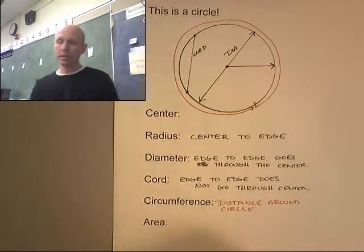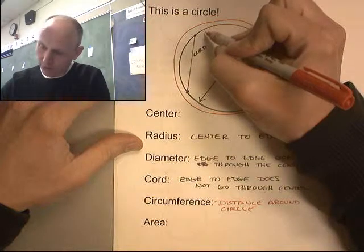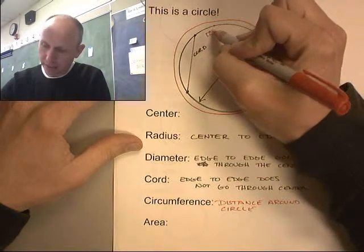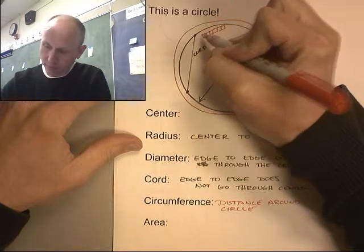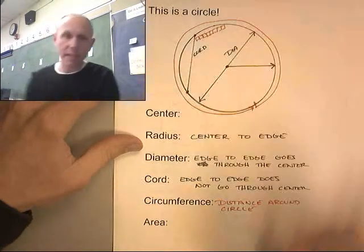And the area, that's how many little squares we could fit inside the circle. So the area is the inside of the circle.